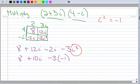Let's continue to simplify. So I have 8 plus 10i. Negative 3 times negative 1, that's positive. So this is going to be a plus 3. And now I can add the 8 and the 3 together to give me 11. So this is 11 plus 10i.